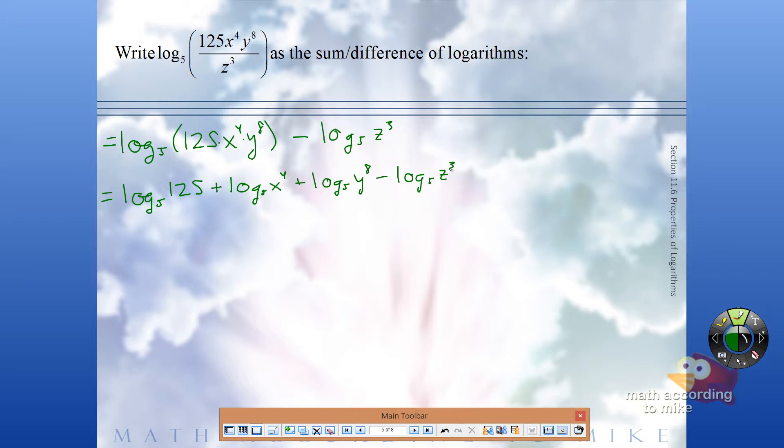So we first did our quotient rule, then we did our product rule, and now we just do some minor cleaning up. For instance, log base 5 of 125 - 5 to what power gives you 125? 3, large print edition.